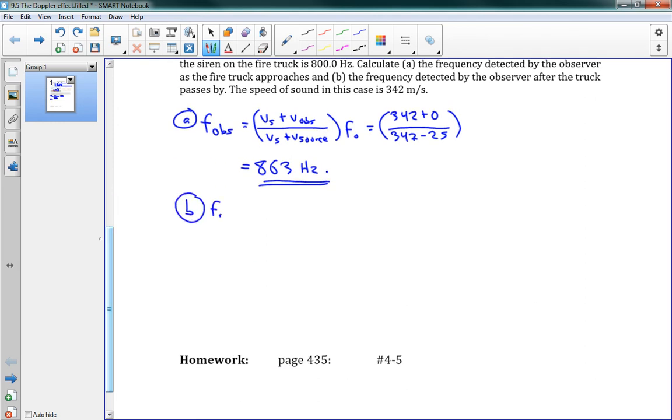Part B, same thing. I'm not going to write the equation again. It's speed of sound plus the speed of the observer, etc. So I'm just going to put in the numbers now. We have 342 plus 0 again. The observer isn't moving.